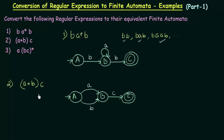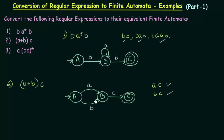Let us see what strings are accepted: A plus B and C means A or B followed by C, so it could be AC or BC. Checking: AC — comes to the final state, accepted. BC — comes to the final state, accepted. We have successfully designed the finite automata for the regular expression A plus B and C.